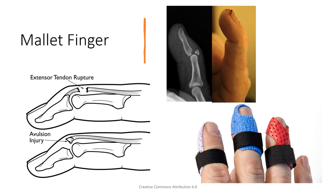Mallet finger is very common. Usually the result of a forced flexion of the DIPJ due to a ball hitting the finger - it's called a baseball injury, cricket injury, or basketball injury when the ball hits. It can be a bony mallet or a soft tissue mallet. I prefer bony mallet because the healing is better - bone to bone - and it usually can be treated very nicely conservatively.